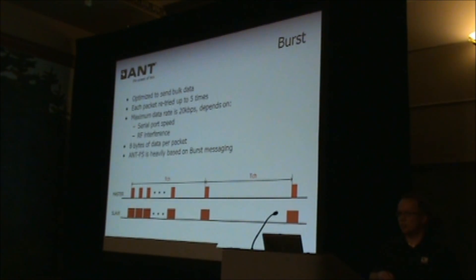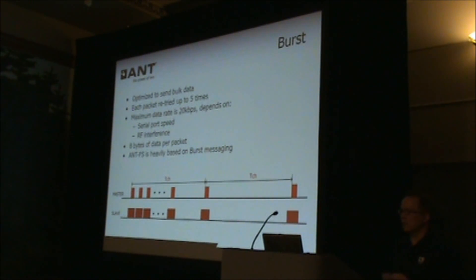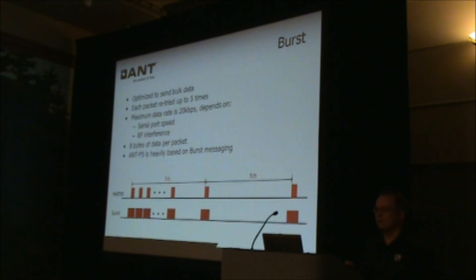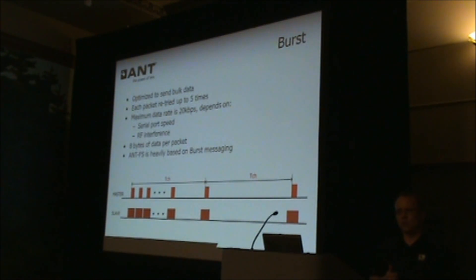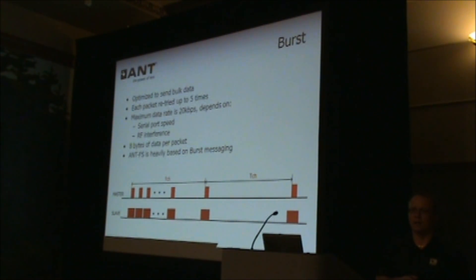The last type of message is the burst message type. Bursting is basically a way of sending data as fast as you can in an optimized way. You start your burst transaction on a channel period, then you send packets as fast as you can until you run out of data to send. Each packet is sent as an acknowledged packet, and the packets are actually retried if they fail — up to five times. If you fail after five times, your application MCU will be alerted of that failure and needs to decide whether to try again or give up.